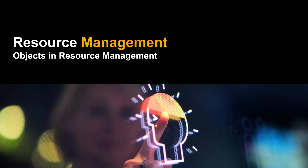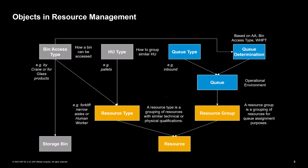Our next topic is to see which objects are available for resource management. A resource represents an employee or their work equipment in the warehouse, for example a forklift. The resource type is assigned to a resource and is used to make a physical distinction between resources. It is used in warehouse management to combine several resources with the same physical properties. The resource type can contain parameters, for example which storage bins the resource can access or which handling unit type can be processed.